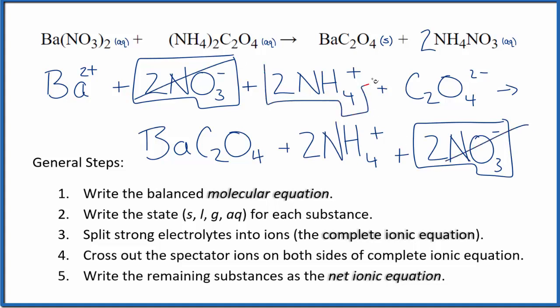Two ammonium ions in the reactants and again in the products here, spectator ions, cross them out. What's left, that's the net ionic equation for barium nitrate plus ammonium oxalate.